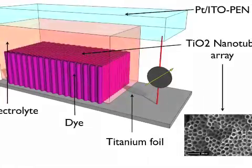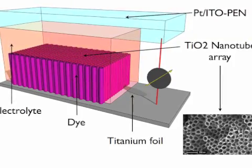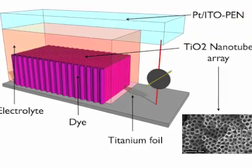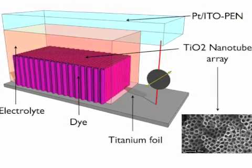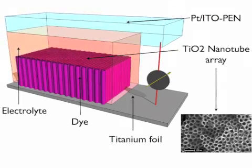We report here for the first time on the use of titanium nanotube arrays for ionic liquid-based rigid and flexible dye-sensitized solar cells.